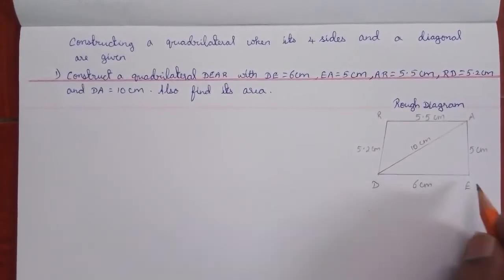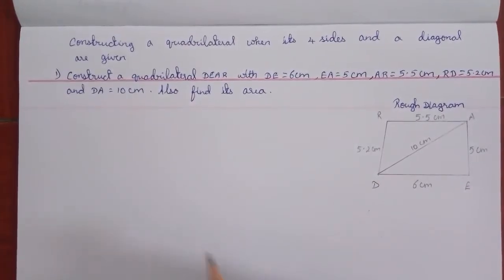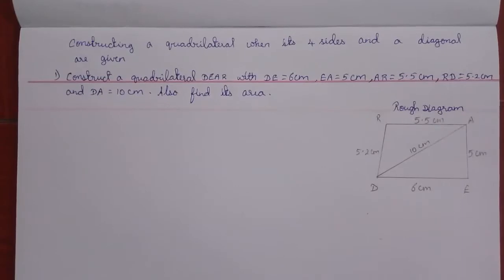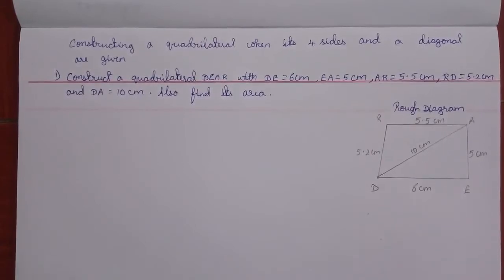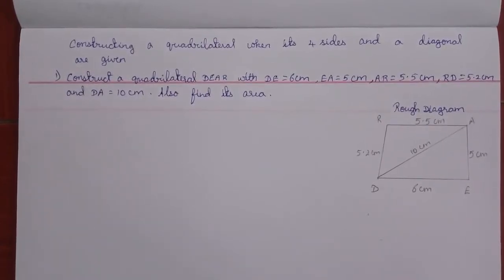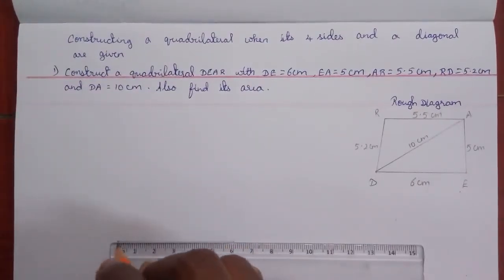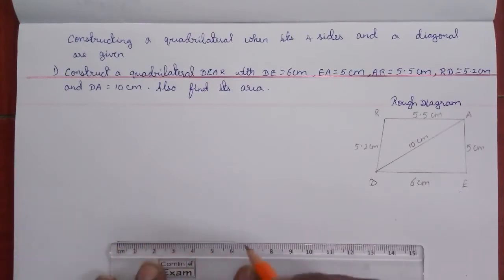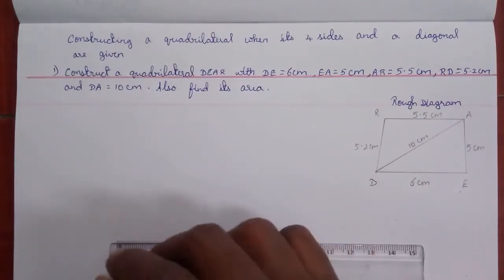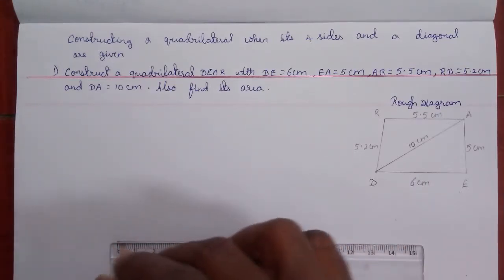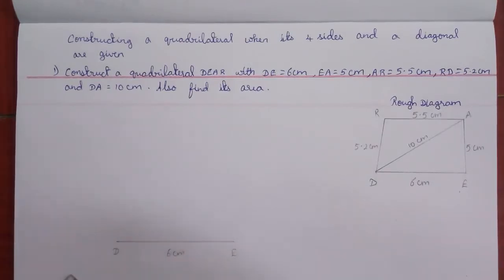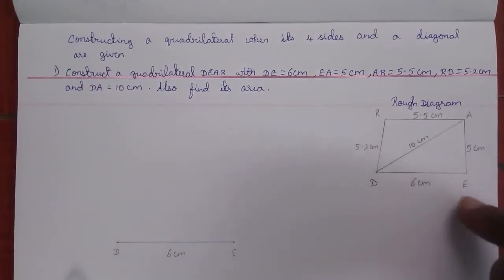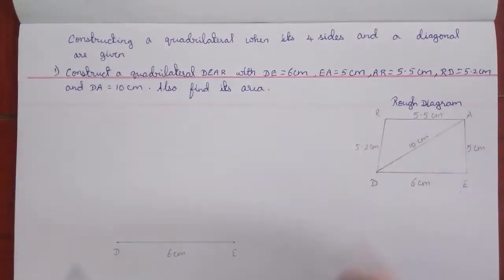First, the base is DE, which is 6 cm. Use a scale to construct it. Before constructing, use a sharp pencil — one for the compass and one for drawing lines. Starting from zero, draw a line of 6 cm to get the base DE.